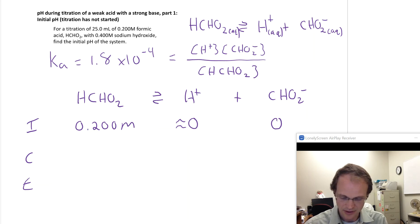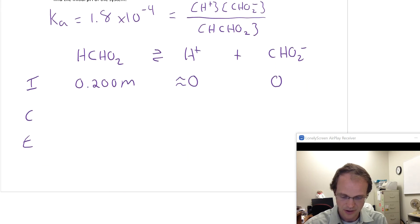The next thing we're going to do is figure out which way it reacts. Obviously, it's going to react moving to the right. So we've got an X here, an X here, and a minus X here. The equilibrium line is just the sum of those: 0.2 minus X, X, and X.